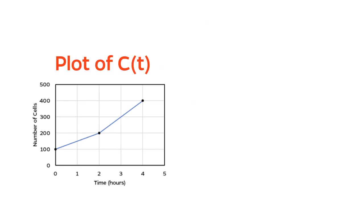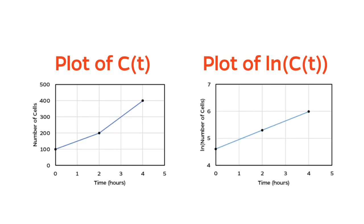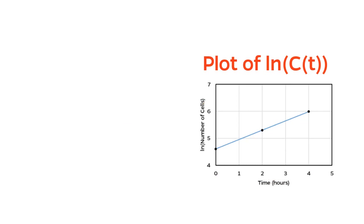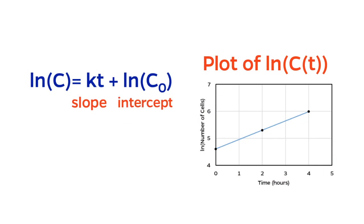So instead of plotting the number of cells as a function of time, let's try plotting the natural log of the number of cells as a function of time. And look at that. The data points are now on the same line. I can now look back at my linearized equation and notice that the slope of this line is just the constant K. And the intercept is the natural log of the constant C0.